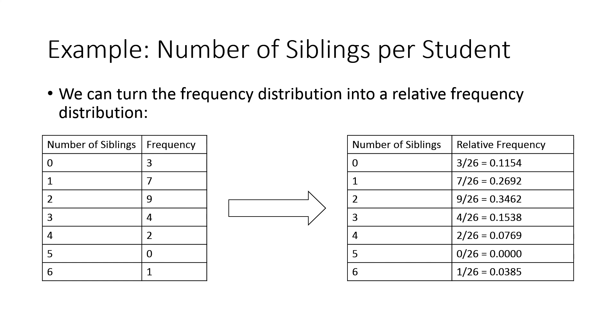So about 27% had 1 sibling because that was 7 out of 26. About 34, 35% had 2 siblings, that was 9 out of 26. So we turned this into a relative frequency distribution. We're just reporting the proportions rather than the actual counts.